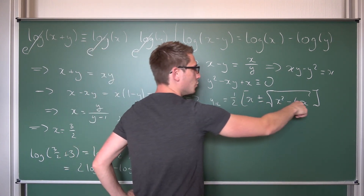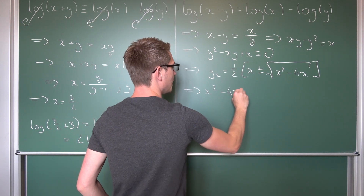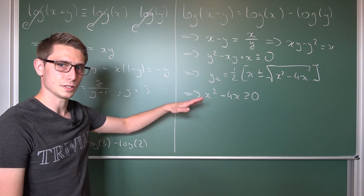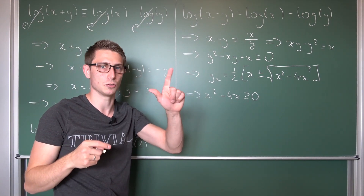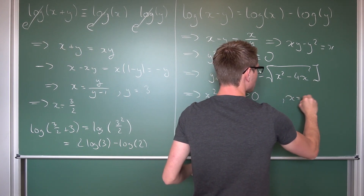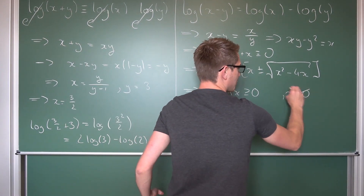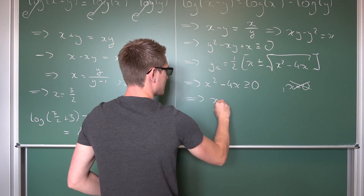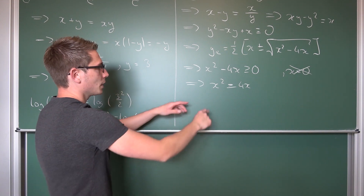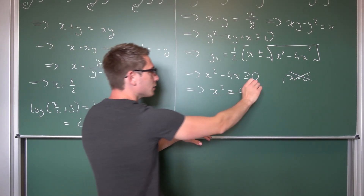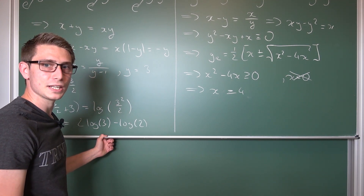For real solutions we need our discriminant to be greater than or equal to zero, meaning x² - 4x ≥ 0. If the discriminant equals zero, one solution is x = 0. If x = 0, then 0 ± 0 = 0, so (x, y) = (0, 0) is technically in the set of solutions, but this is not valid for our original problem. Otherwise, we can conclude x² ≥ 4x, and excluding zero, we get x ≥ 4.